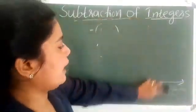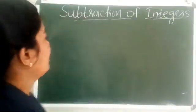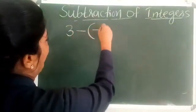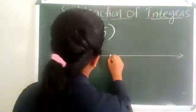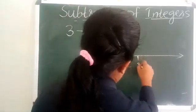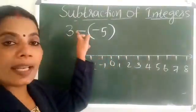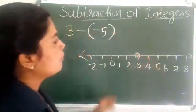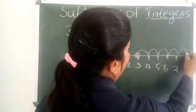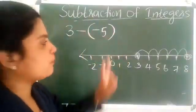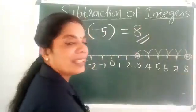Next case: how to subtract a negative integer on a number line? In addition, to add a negative integer we move to the left. Here, consider the example 3 minus minus 5. Draw a number line marking up to 8 and minus 1, minus 2 on the left. Starting from 3, move 5 steps to the right: 1, 2, 3, 4, 5. We get 8. That is, to subtract a negative integer, we move to the right on the number line.